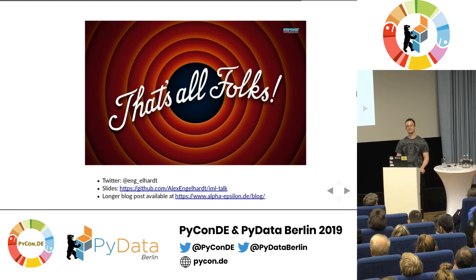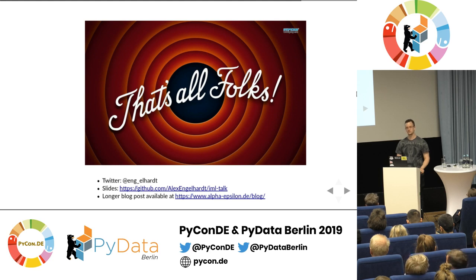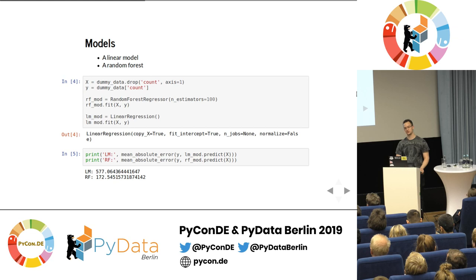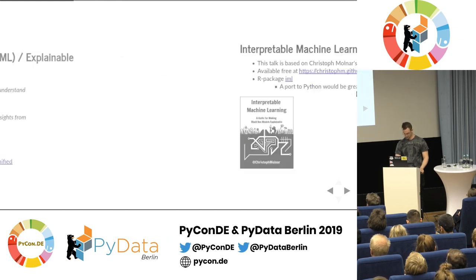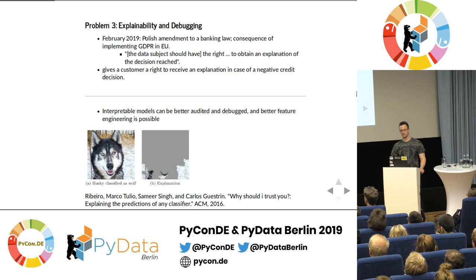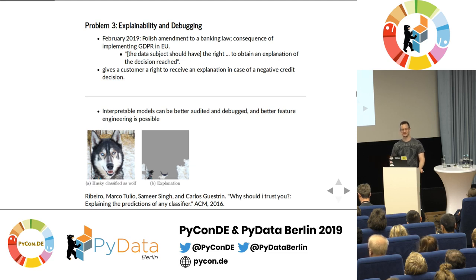Question: What about images, audio, or video as input? You can get the importance of a single pixel, but that doesn't help. Do you have advice on how these methods could be applied? Answer: There are different methods for images. The talk and the IML book are more focused on structured/tabular data. However, the husky/wolf example used a method called LIME, which can be applied to both structured data and image data. For images, there are other methods that highlight relevant regions. It's an active field of development.